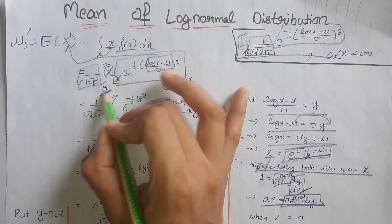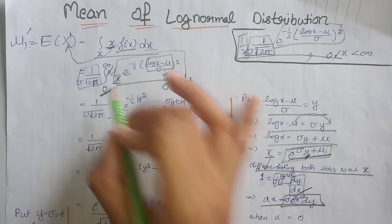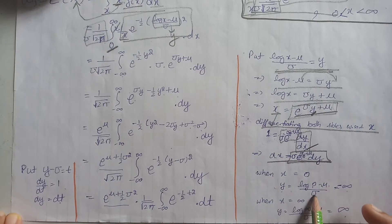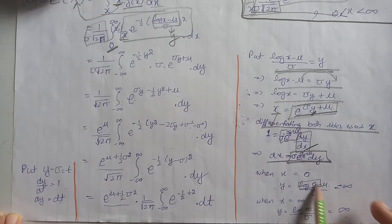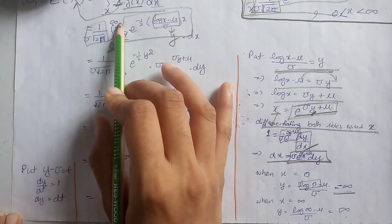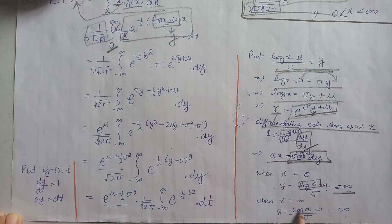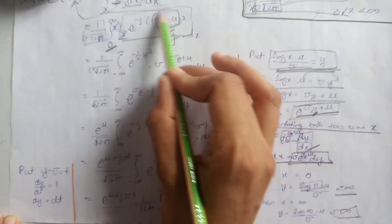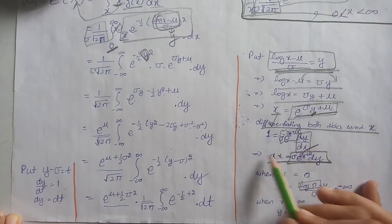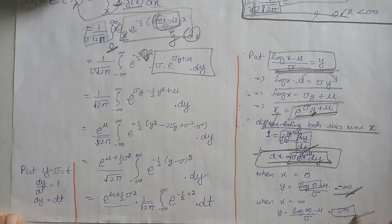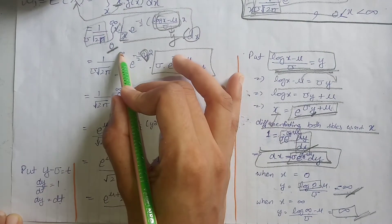When x = 0, y = (log 0 - μ) / σ, and since log 0 is undefined, we write y = -∞. When x = ∞, y = (log ∞ - μ) / σ, and since log ∞ = ∞, we write y = +∞. So the new limits of integration are from -∞ to +∞.